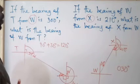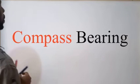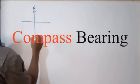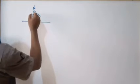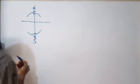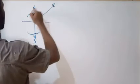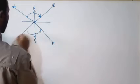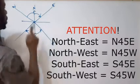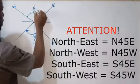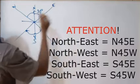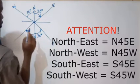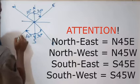Now let's move to compass bearing. In compass bearing, unlike the three-figure bearing, we take readings from both the north and the south — towards the east and towards the west. So if I'm told that somebody moves north 30 degrees east, or south 30 degrees east, or south 30 degrees west — that's how to represent it.